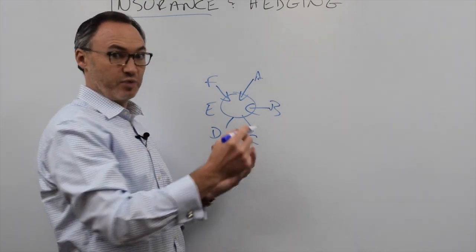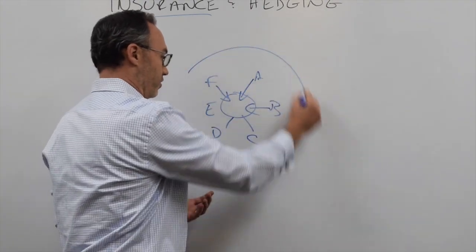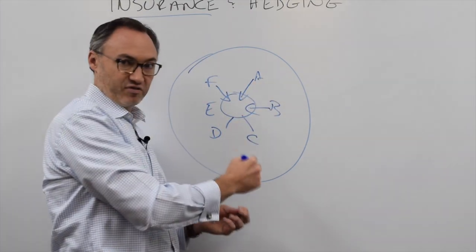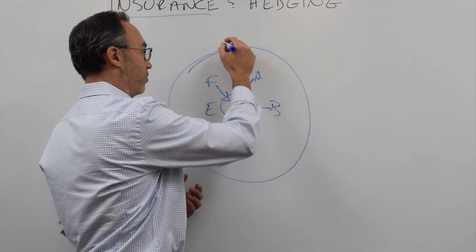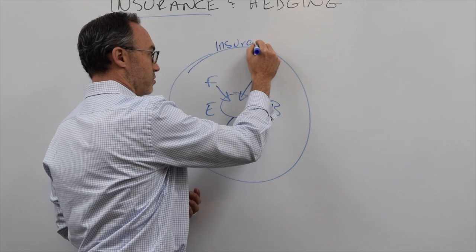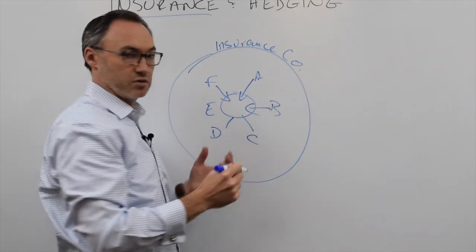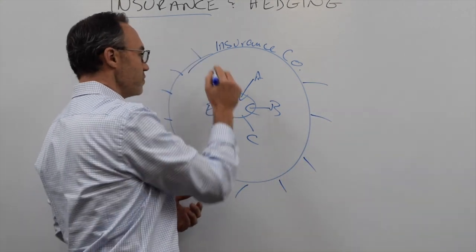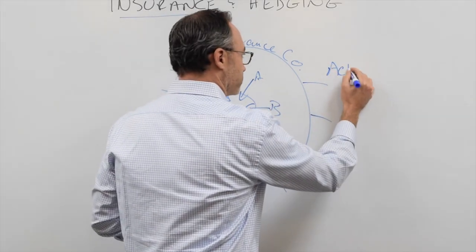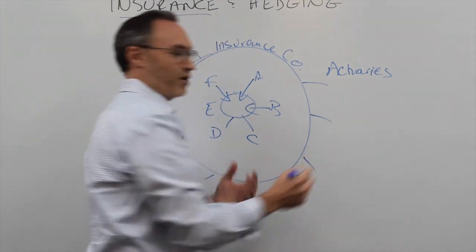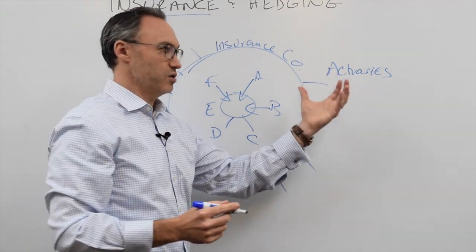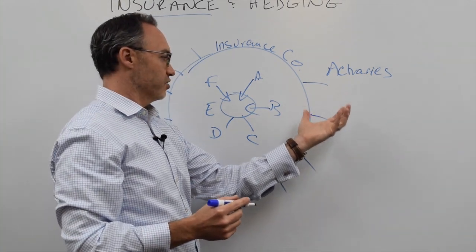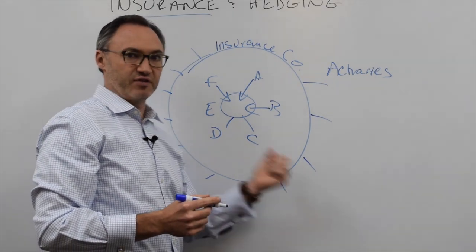Then what happened was commerce became big. The community got bigger. The community got to be worldwide and it got to be very difficult for these people to keep track and insure. So you had to have a central party. So this was called the insurance company. And the insurance company's job is to look at all these risks and all these potential players and evaluate. And they have what's called actuaries. And actuaries are evaluating the risk. What are the chances? What are the odds? What are the chances that some certain bad event can happen and cause one or more of these insureds to need this benefit?